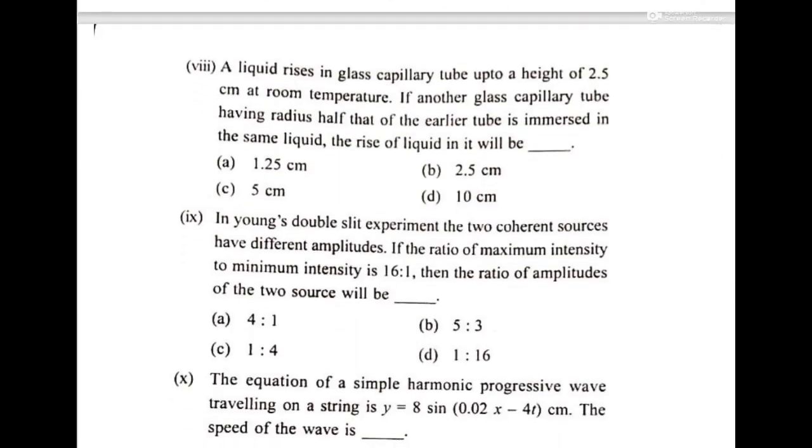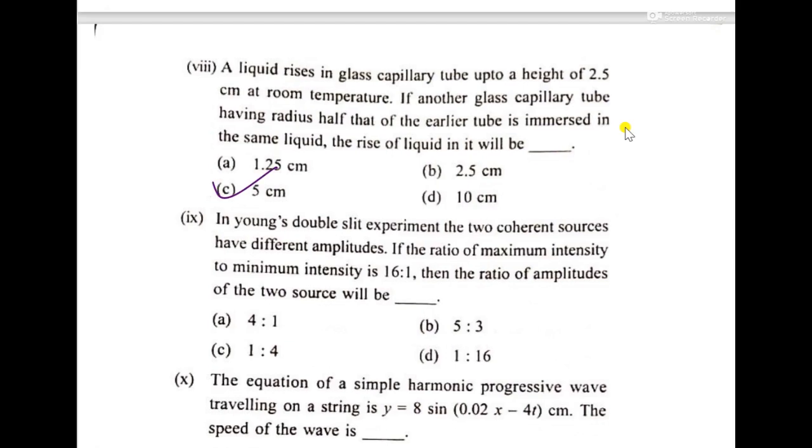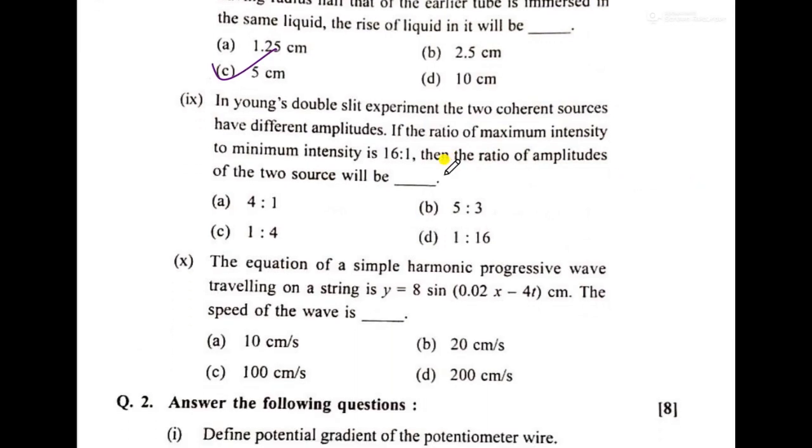Then the liquid rises in a capillary tube up to a height of 2.5 cm at room temperature. If another glass capillary tube having radius half that of the earlier tube is immersed in the same liquid, the rise will be 5 cm. Then in Young's double slit experiment, the two coherent sources have different amplitudes.